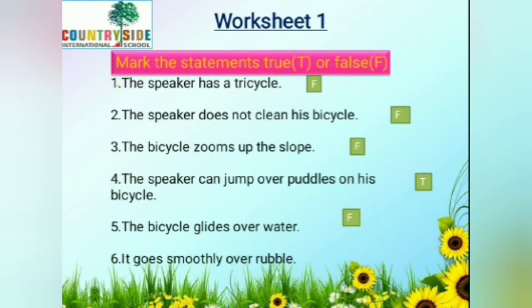And the last one: it goes smoothly over rubble. Rubble, as we saw, means broken pieces of rocks and stones. So it finds it difficult to move over the rubble — it struggles over rubble. Here they have given 'it goes smoothly over rubble,' which is false.